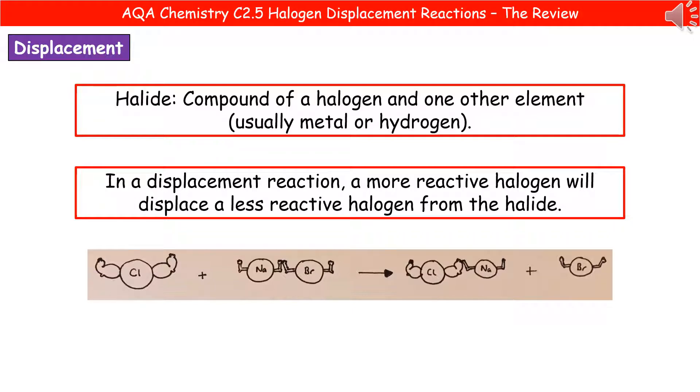So as we said last time, when we're making the salt, then we make something called a metal halide. And quite simply, when we're referring to a halide, it's a compound of a halogen and one other element. And that element is usually metal or hydrogen.